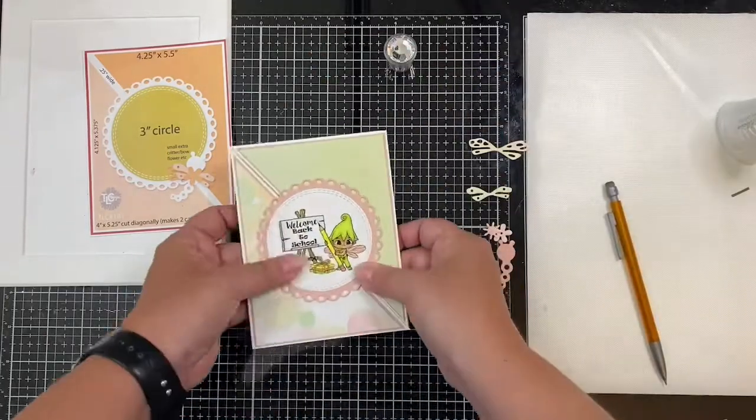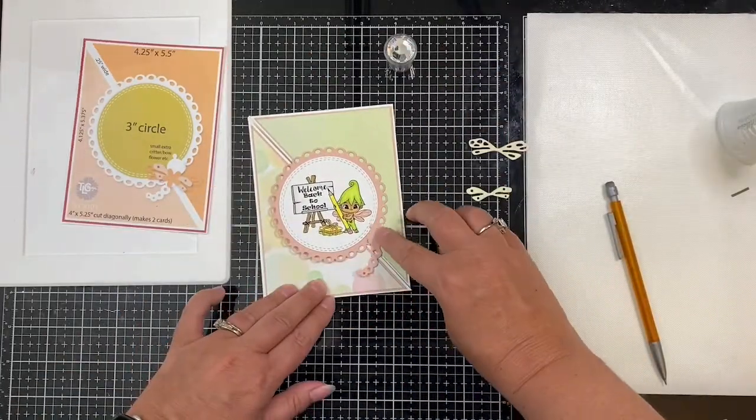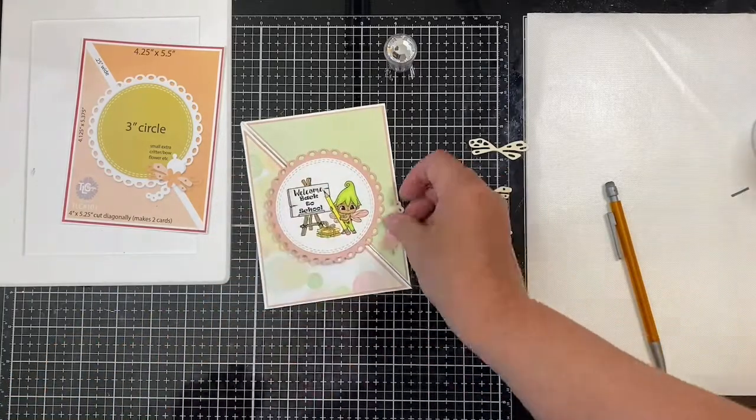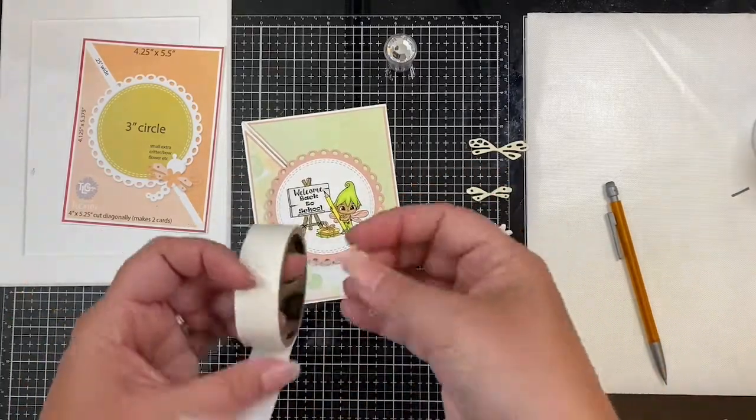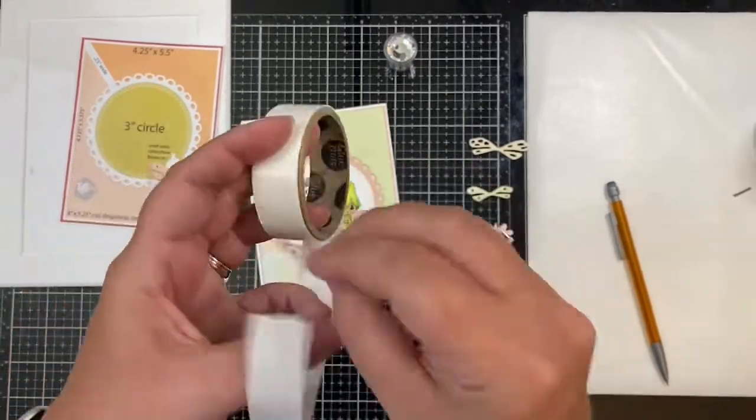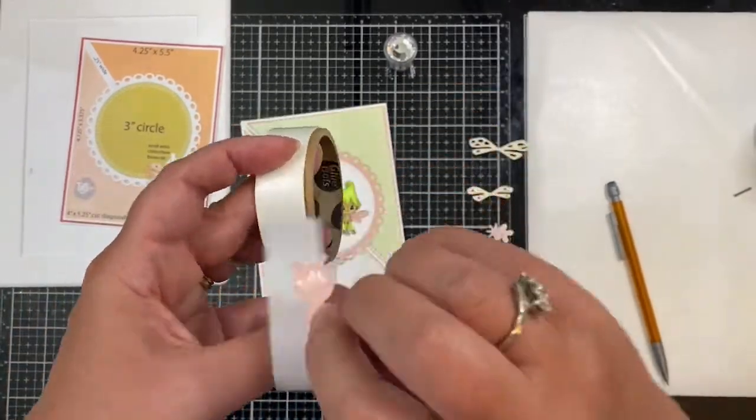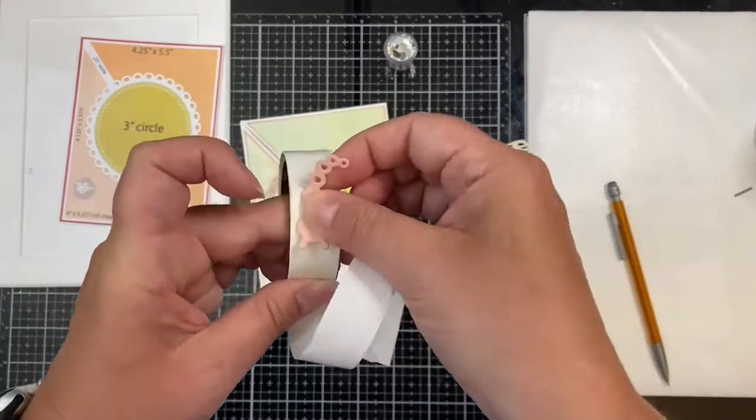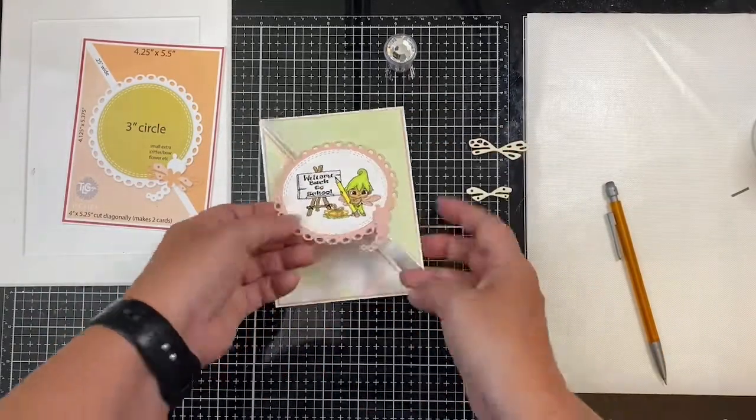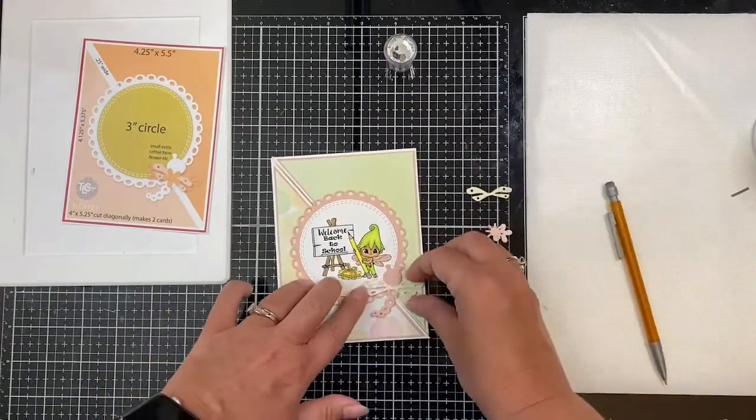And then I glued the pink dragonfly's body to the circle, just the head of it. And I used some glue dots. I only used glue dots on the head, so I didn't put any adhesive or anything on the rest of the body. And that way the dragonfly can just kind of hang over the side there when you open it up.